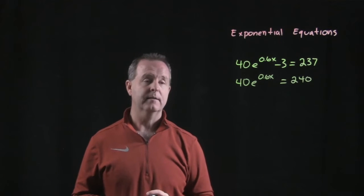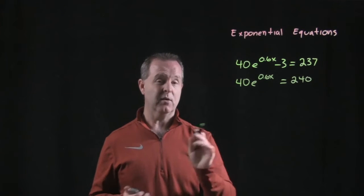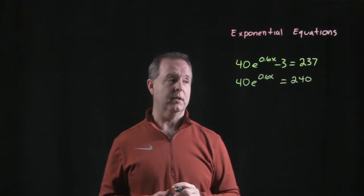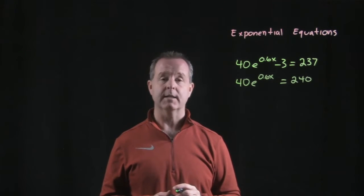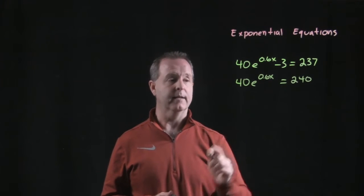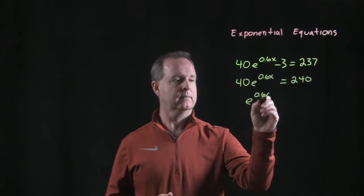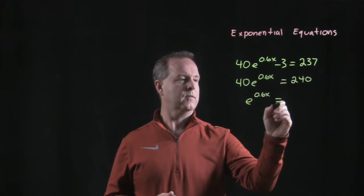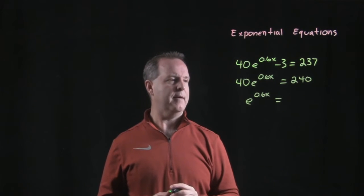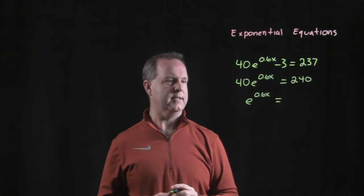From there, we can still isolate the variable term by dividing both sides by 40. 40 divided by 40 is 6.